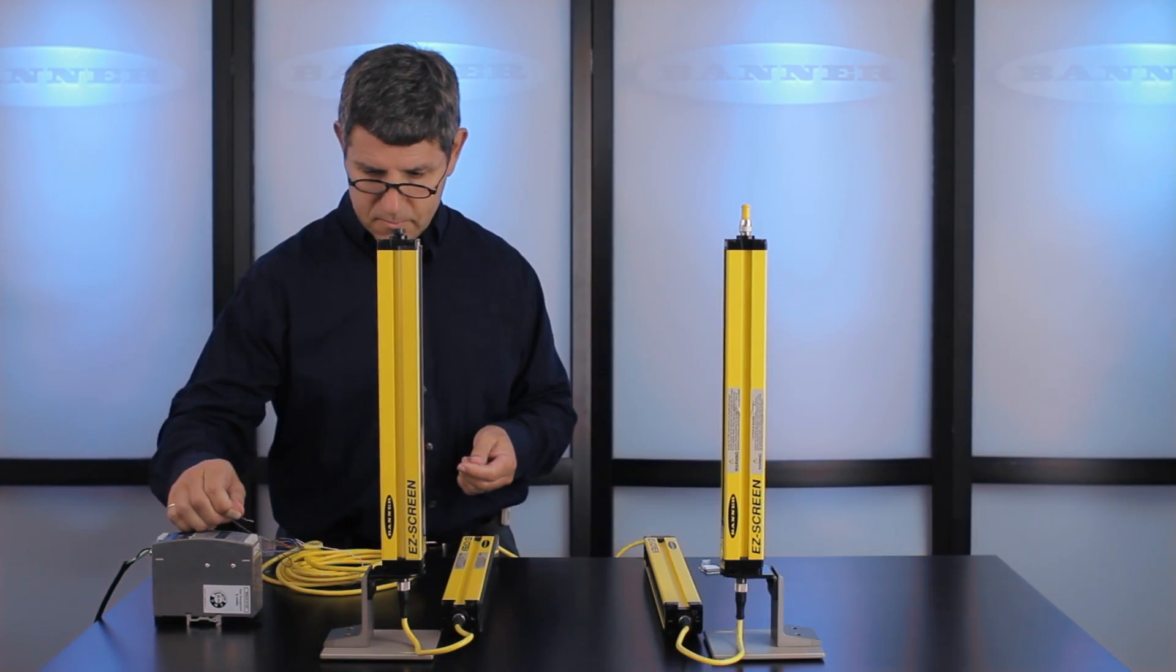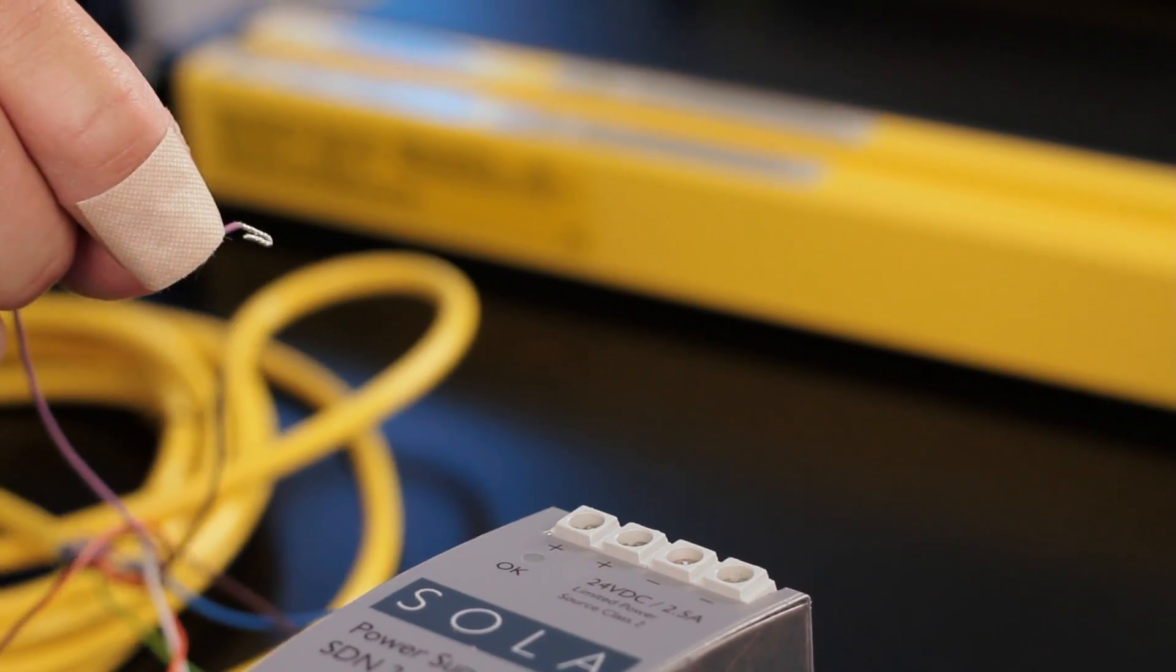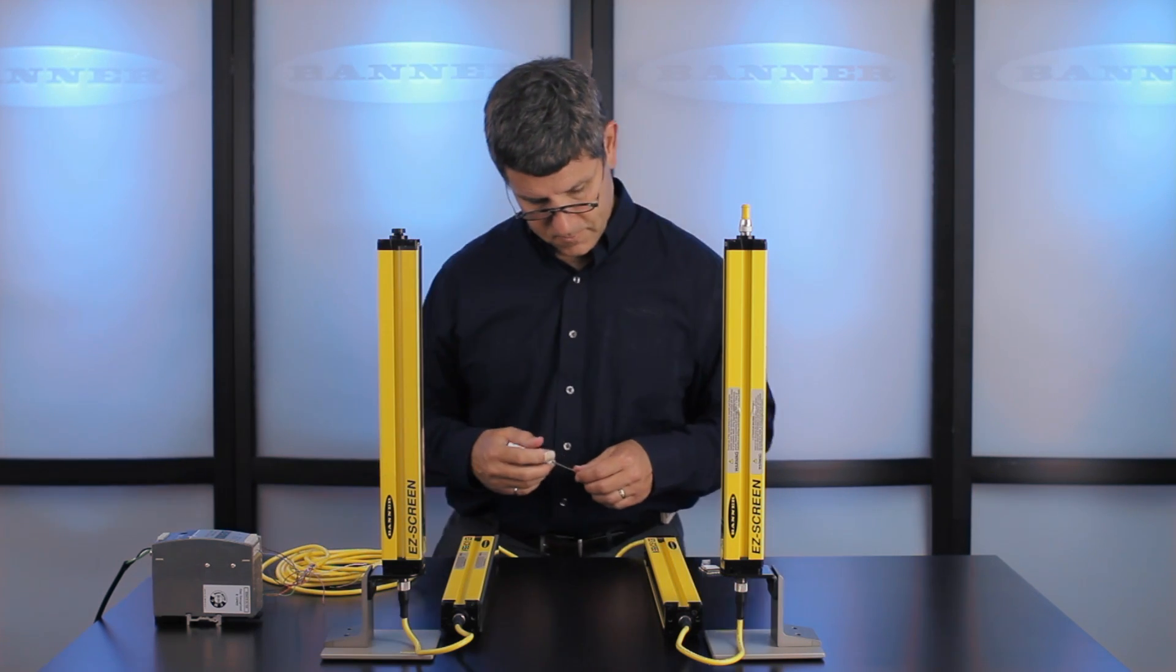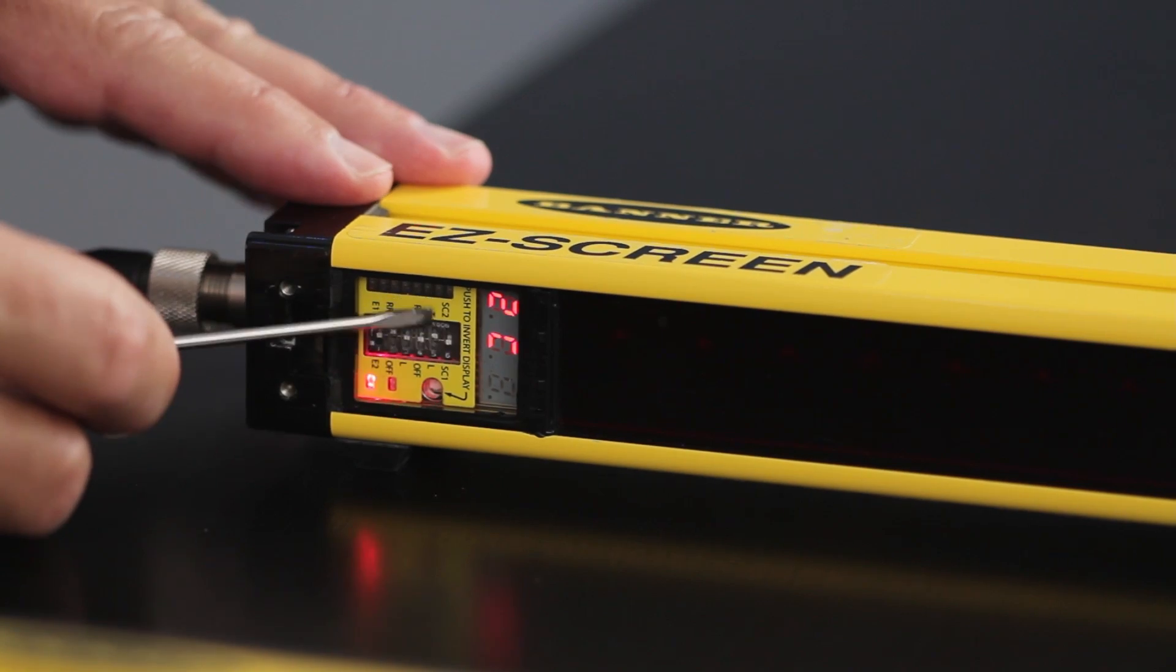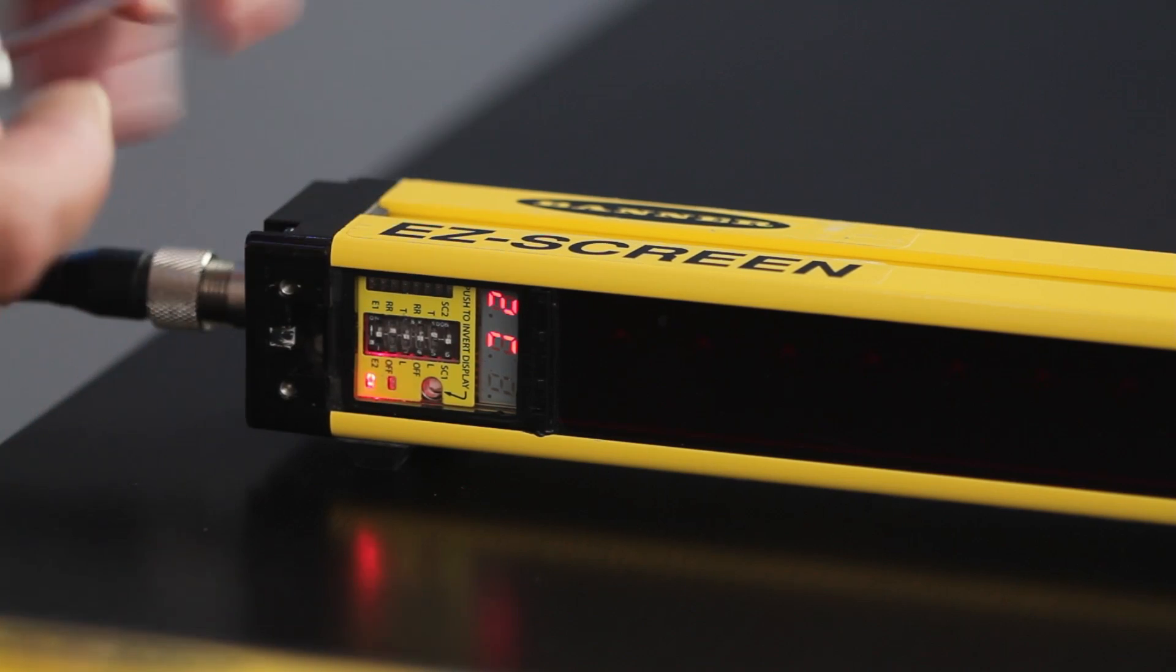Reset the system with power or the reset line. Once that's done you should have a number and a letter showing in the first receiver. In this case we show a 2C.